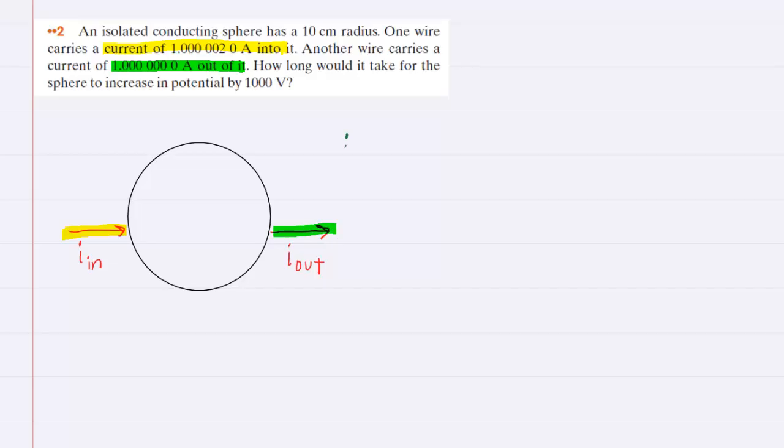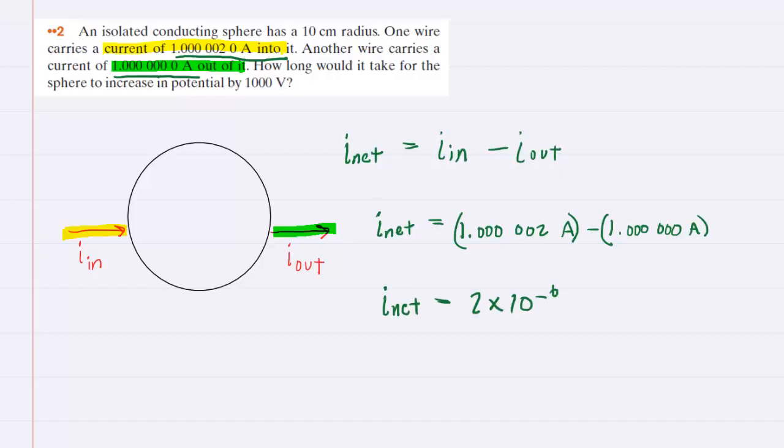Now, of course, the net current that would be traveling onto the sphere would equal the amount of current that's going in minus the amount of current that's going out. So the first thing we want to do is figure out that net current, and that's relatively easy to do. We can plug in this value for the current that's going in, and then this value for the current that's going out. And then if we subtract these two currents, we would see that the net current is 2 times 10 to the minus 6 amps.